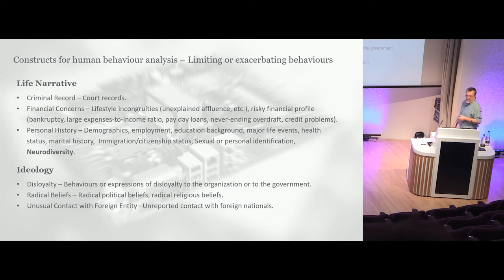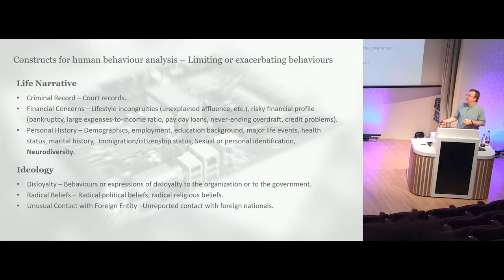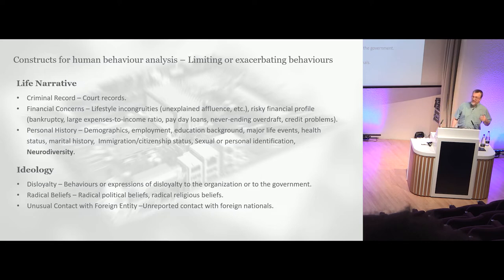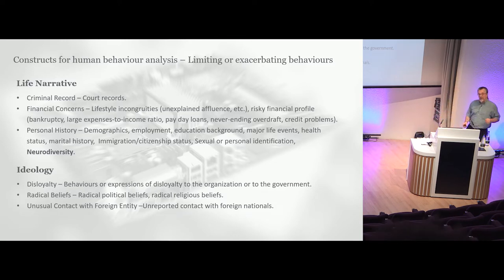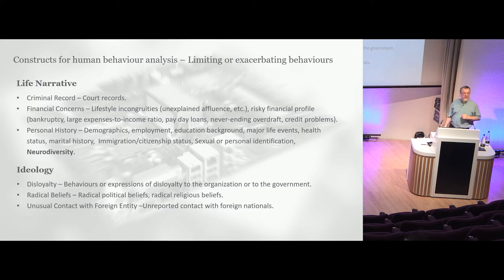We then start to take in things like life narrative. Many will be weeded out by vetting or hiring processes — criminal records or financial concerns. You may get personal history such as demographics or ideology. You may also be dealing with neurodiversity. This is important because SOFIT takes into account that neurodiverse people may appear slightly differently on the scale — that does not make them bad actors or threat actors. As such, it is important to create a norm for each person because what you're looking for is changes in behavior. It is the change in behavior that is your trigger.